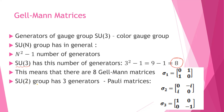SU(2) group, for example, has 3 generators because it's 2 to the power of 2 minus 1 — 4 minus 1, overall 3. These 3 generators are called Pauli matrices and they are listed here as sigma 1, 2, and 3. Why am I mentioning these matrices? Because Pauli matrices are actually the matrices we will use as a sort of basis for structuring Gell-Mann matrices. Let's see how.